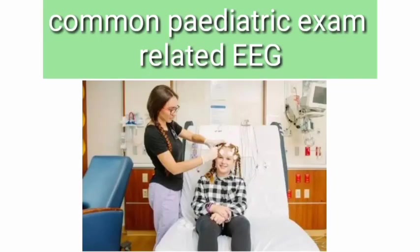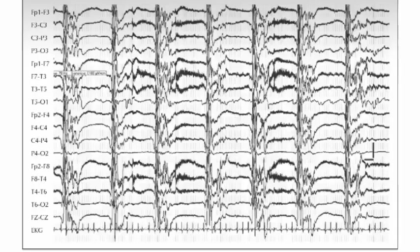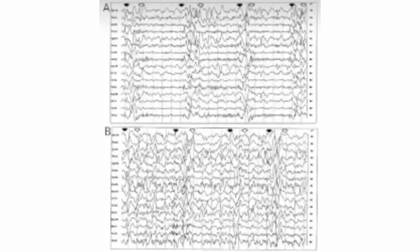Now I will discuss common pediatric exam-related EEGs. First is the SSPE EEG — subacute sclerosing panencephalitis, which usually occurs post-measles and is immune-mediated. The typical EEG description is 'periodic burst suppression pattern.' Three words are key: periodic, burst, and suppression. 'Periodic' means that after a specific period of time the same pattern repeats. You can see in the EEG that a periodic burst suppression pattern is present — this is the classic finding for SSPE.